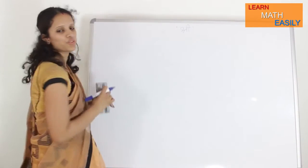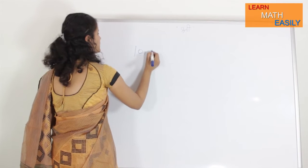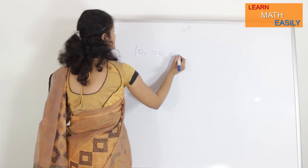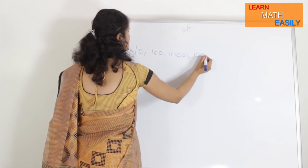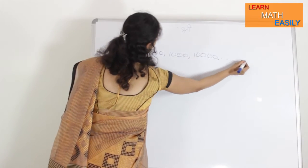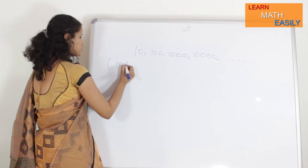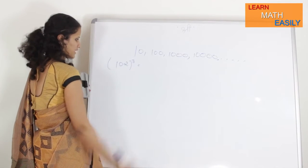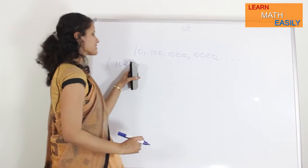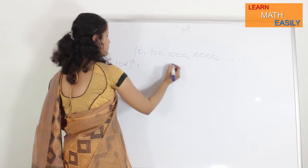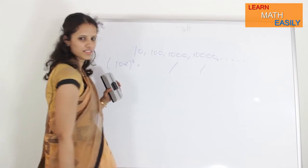I am going to teach you cube of numbers which are near to the basis like 100, 1000, 10,000, lakhs and so forth. If suppose I have to take 102 cube, then how to do it? First of all, since this cube is there, so we will divide this into 3 parts. Here, base is 100.